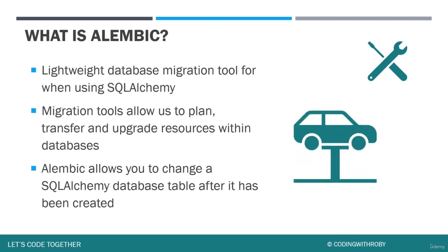I like to imagine it is similar to how a car works. You have your car which has four doors, four tires, a windshield, and some accessories. You may not know you want tinted windows when you first get your car, but after you purchase it you go ahead and get your windows tinted. This is how the migration tool works — you created the original database table to the best of your knowledge, but later on you found out you need to enhance the table. So we will use Alembic to make changes to our database.